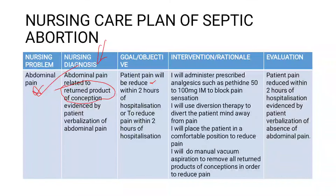That can be our goal objective. And if you are using the objective format, you can say to reduce pain within two hours of hospitalization. In terms of interventions, you can administer analgesics — pethidine 50 to 100 milligrams IM to block pain sensation, and also paracetamol 1000 milligrams to reduce pain.